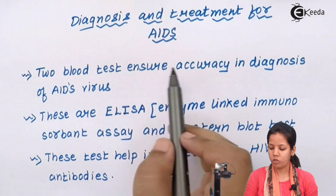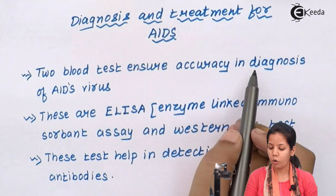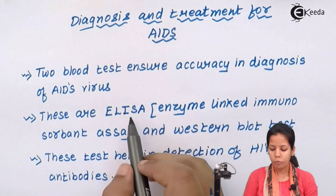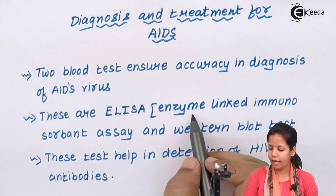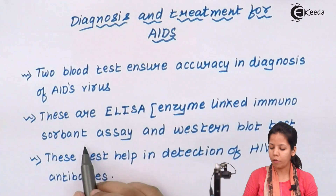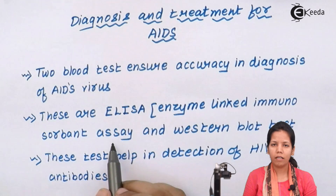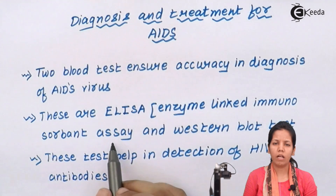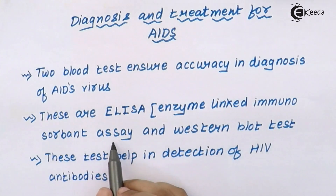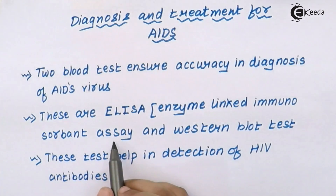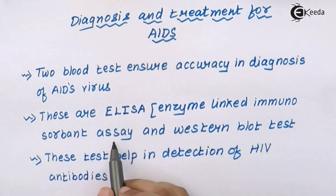The two blood tests that ensure accuracy in the diagnosis of AIDS are: first, ELISA — Enzyme Linked Immunosorbent Assay. This test includes a set of test tubes along with certain chemical reagents and a blood sample from the patient. If the AIDS patient has HIV virus in their blood, antibodies would be produced, and the ELISA test basically tries to detect those antibodies present in the blood sample.